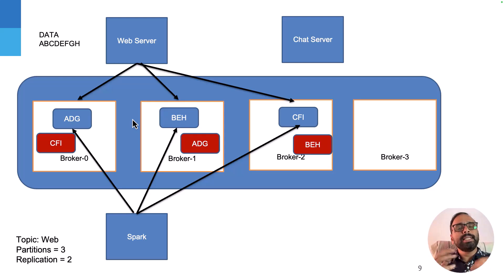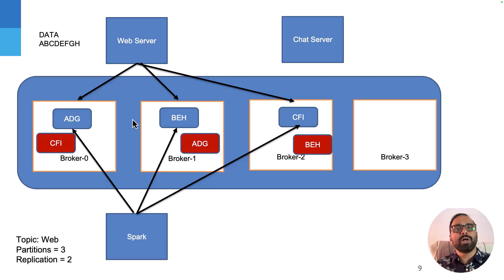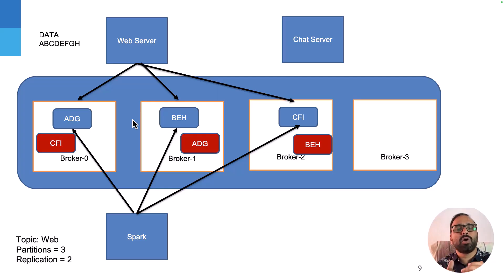This looks fine, but there is a problem. In the real world, producers are actual systems that might be producing huge amounts of data. Think about an e-commerce company — the web server hosts their website and maybe there are hundreds of web servers producing data and sending it to this topic. So a question naturally arises: what if the producers are generating so much data that the broker eventually becomes full?